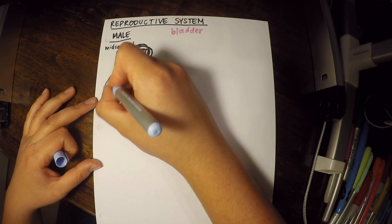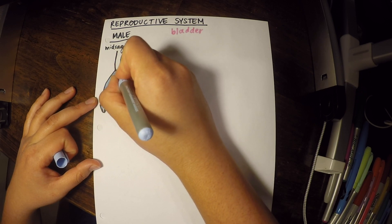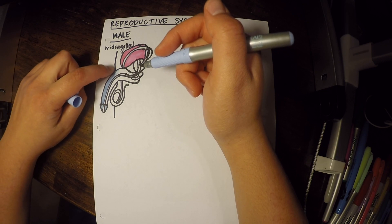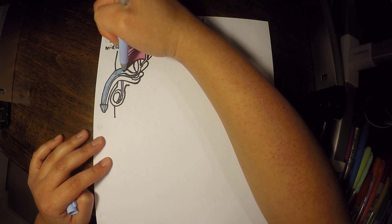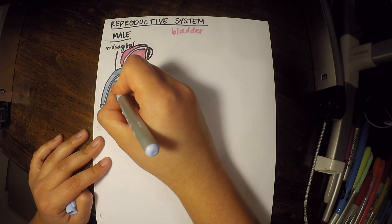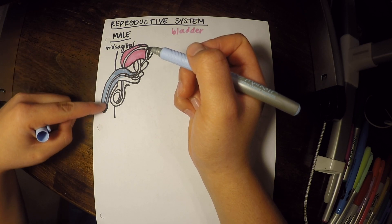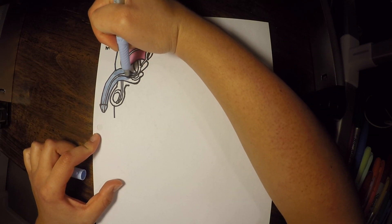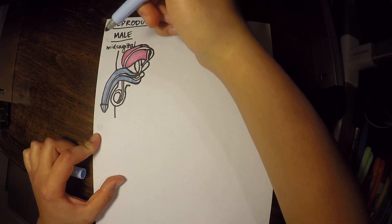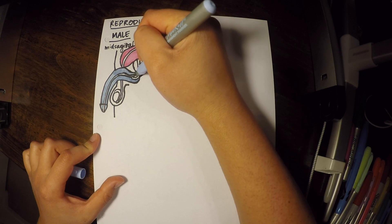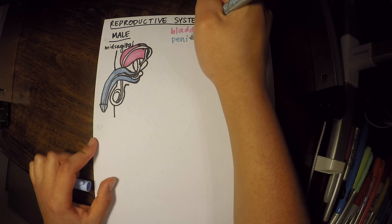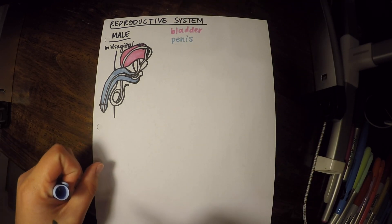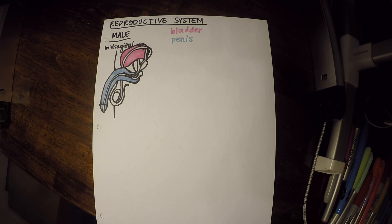So this is going to be the penis. Oftentimes people think the penis just ends right where it attaches to the body, but it actually extends further. Do you remember what vessel travels through the penis? We learned about it during our last lecture — that is the urethra. And do you remember the different parts of the urethra?